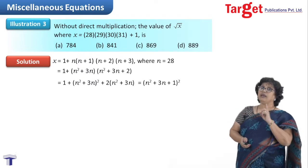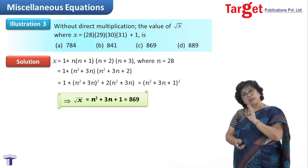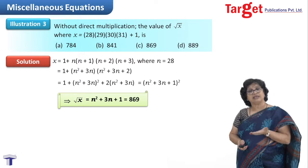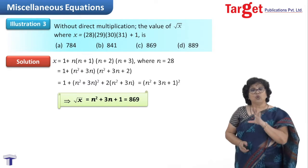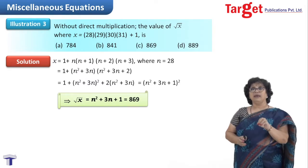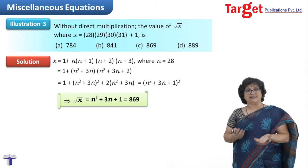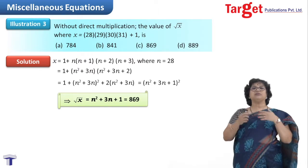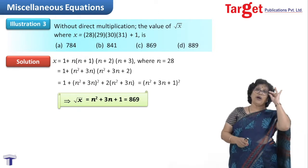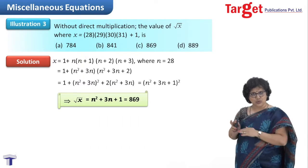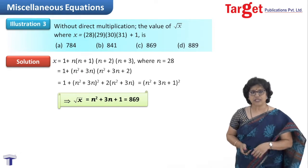What would be √x? √x would be simply n²+3n+1. What is n? n is 28. Substitute and simplify: 28²+3×28+1. You will get √x = 869. Realize that nowhere did we try to multiply 28, 29, 30, and 31. The question setter must have had this fear that no one should think of multiplying those numbers, so he declared without direct multiplication you have to find √x. We used this idea and arrived at 869, which is option C.